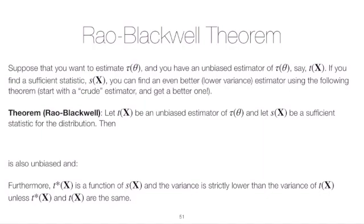So we start out with an estimator t of x, and it has to be unbiased, so it's an unbiased estimator of tau of theta, and we have a sufficient statistic. Then if we define t star of x to be a new estimator, we want to define it to be the expected value of t of x, the original estimator, conditioned on the sufficient statistic s of x.